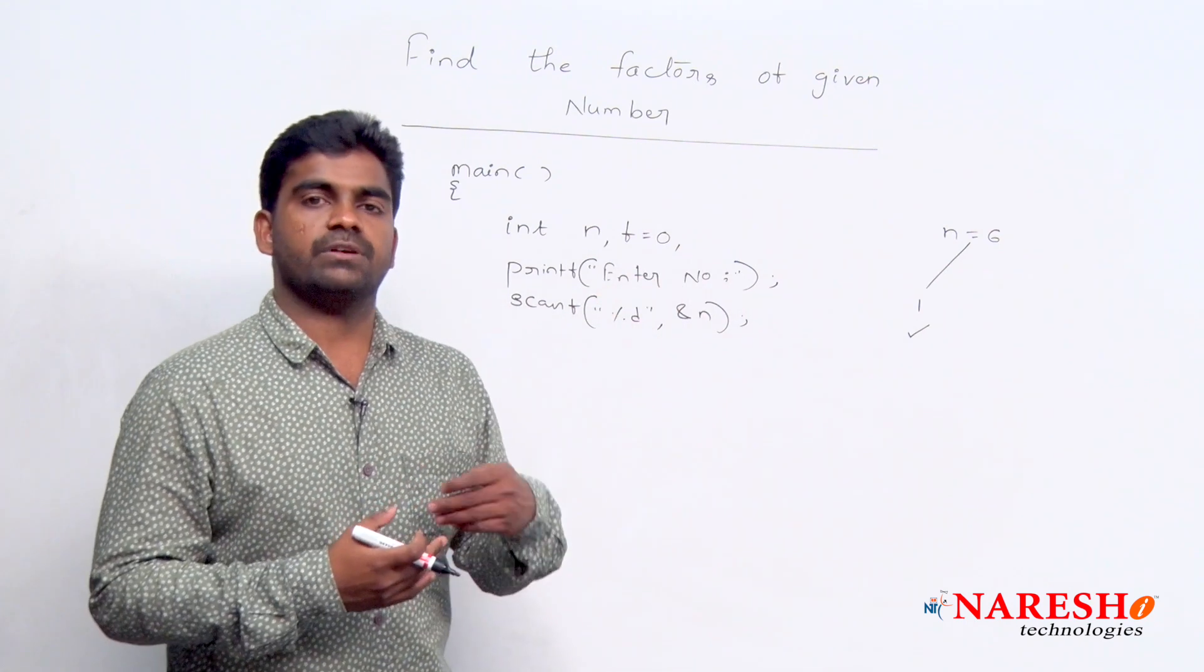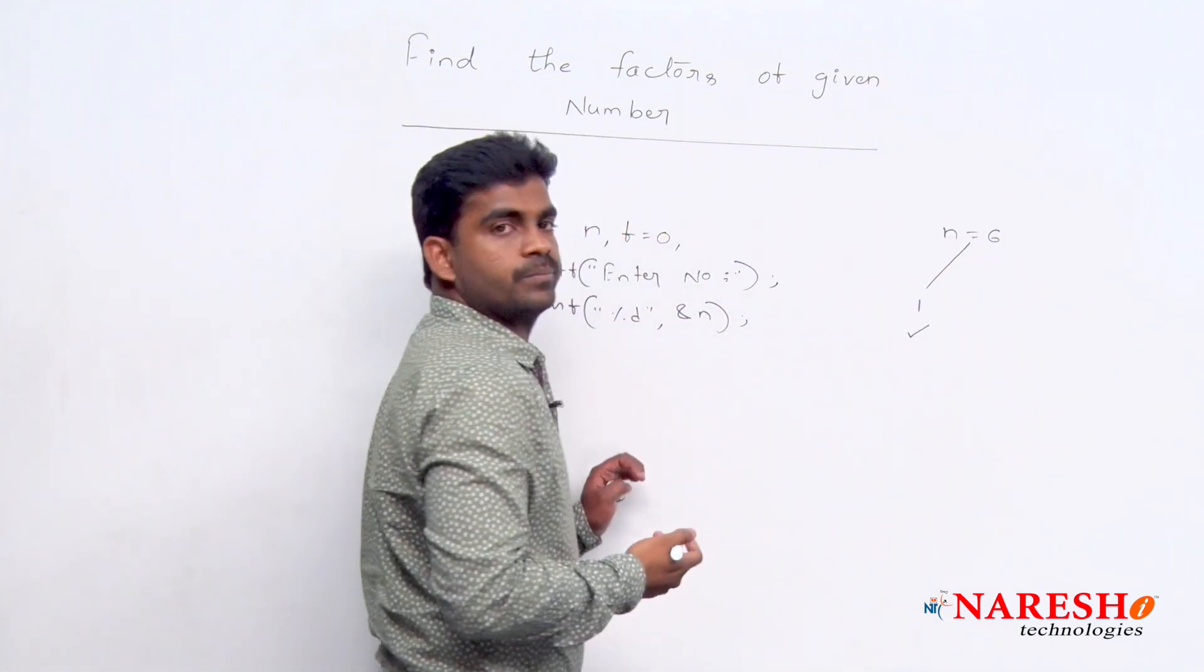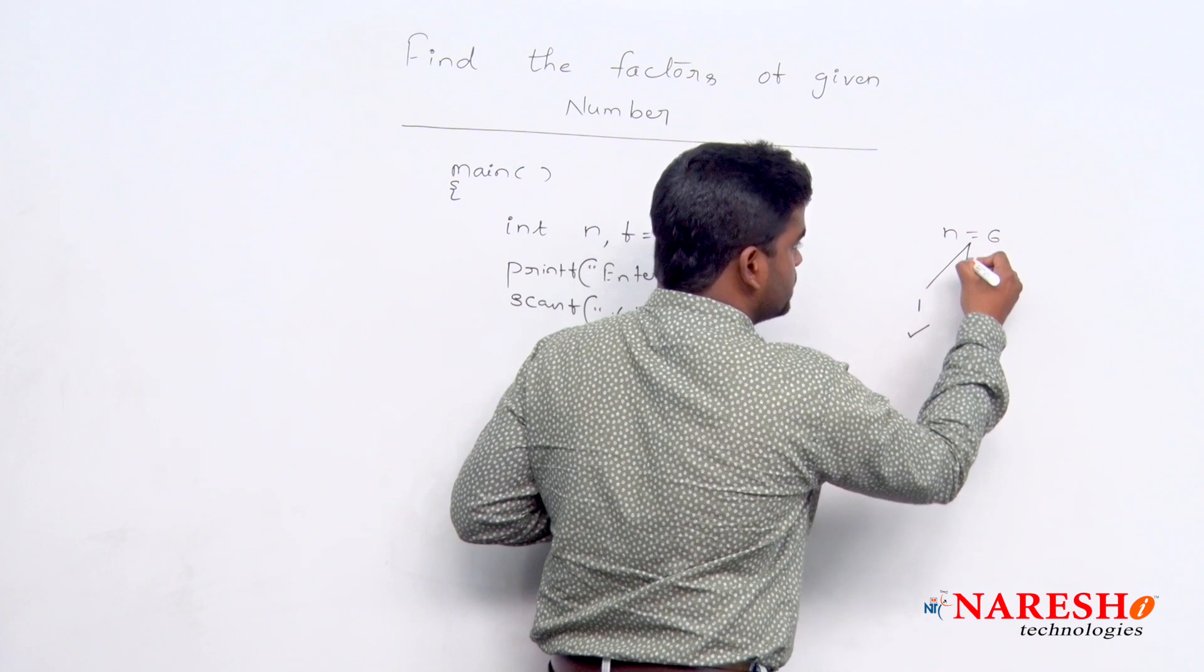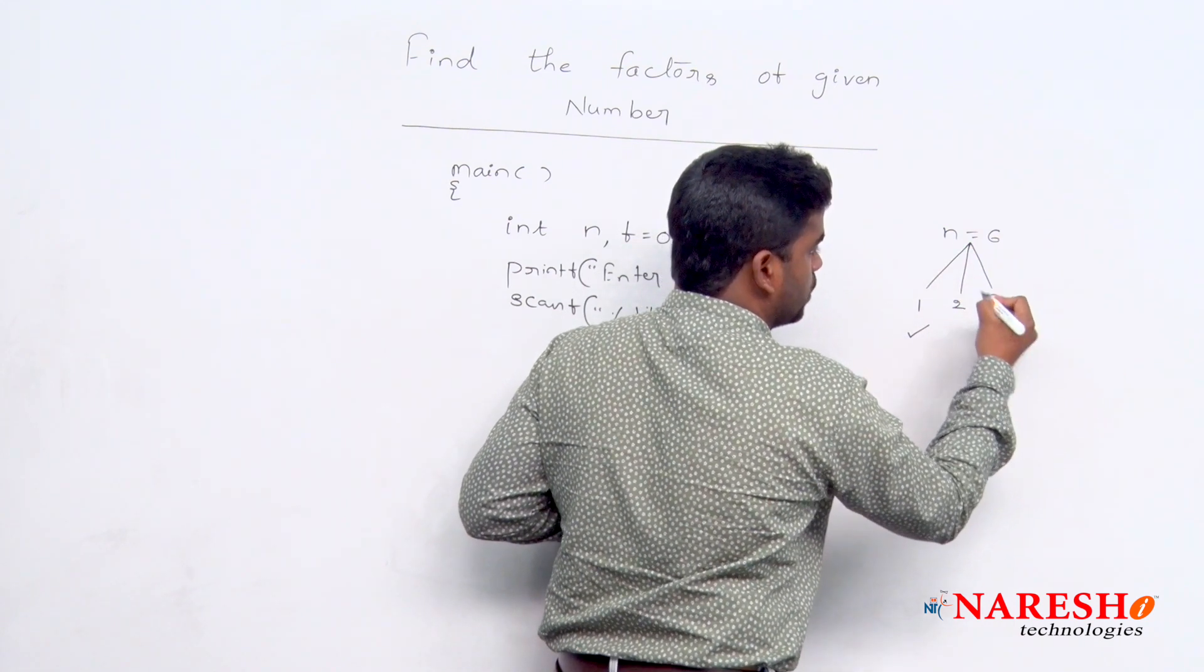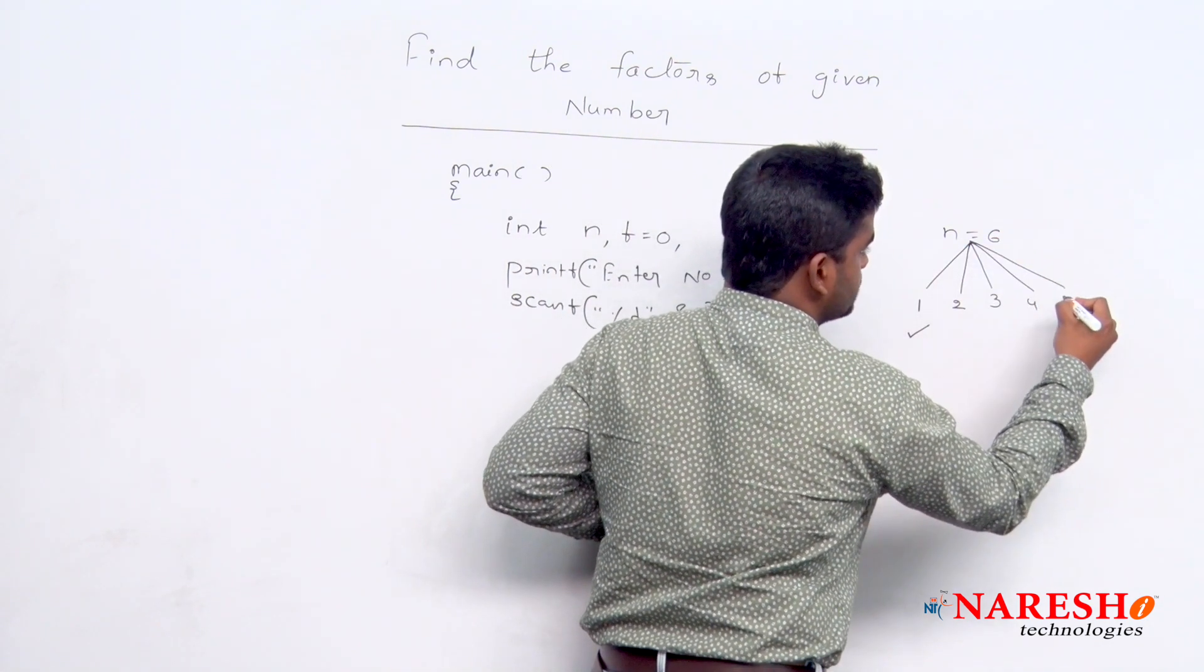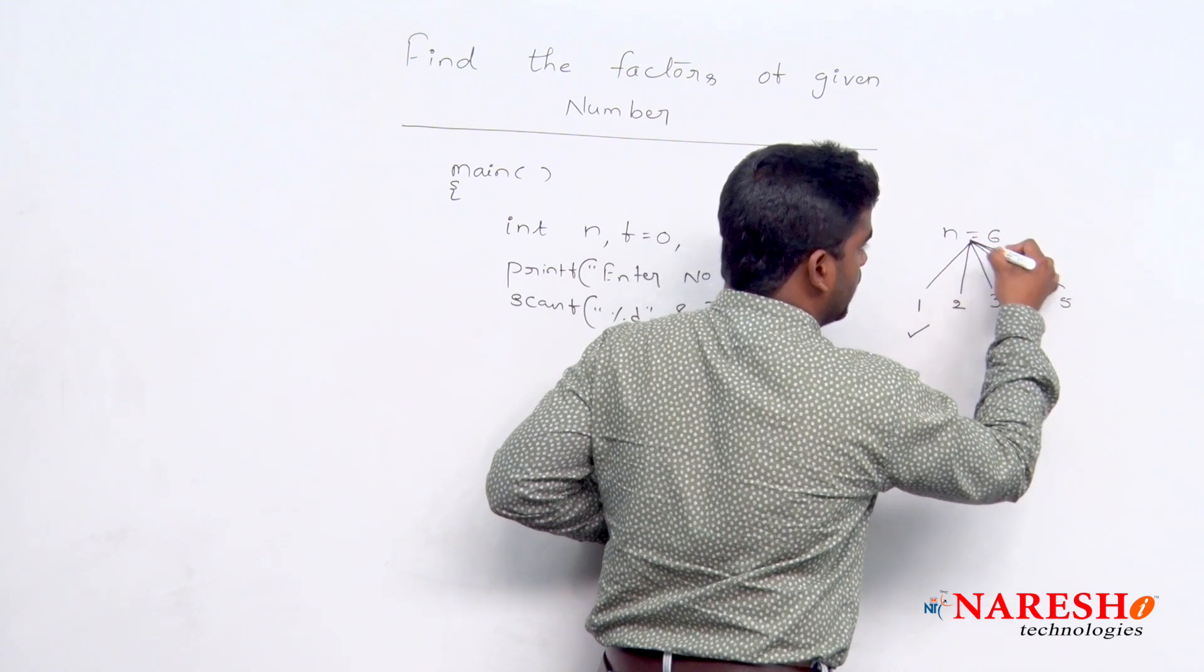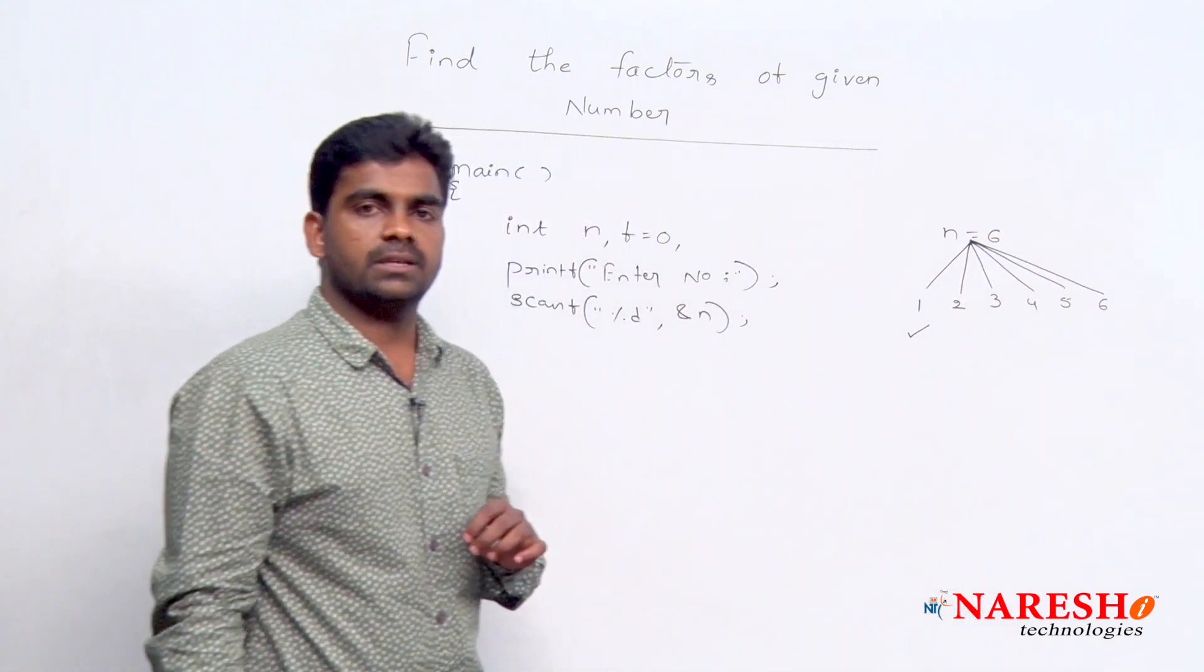Everything I want to specify with the logic only. Here it is n equal to 1, and next n is divisible by 2 or not, n is divisible by 3 or not, n is divisible by 4 or not, n is divisible by 5 or not, n is divisible by 6 or not, we are checking.